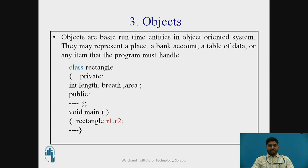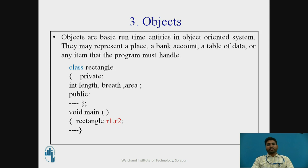In public we write member functions. Then the main program starts — void main. The class name rectangle is called, and r1 and r2 are the objects created in this example.